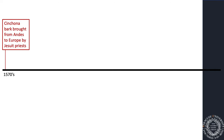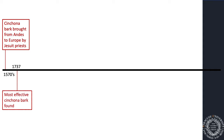Malaria is an old, old disease. Its name is Latin for 'bad air,' and it was thought to be associated with swamp gas. In the 1570s, bark from a cinchona tree — which grows in the Andes — was brought back to Europe. Jesuit priests had learned that indigenous people there chewed this bark and used it in medicines. Over the next 200 years, they found the most effective type of cinchona bark to fight malaria.